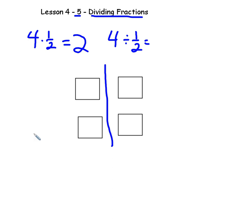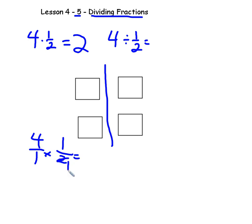The way to solve it mathematically is to write the whole number as a fraction: 4/1, times 1/2. Multiplying fractions is no big problem — multiply the top by the top and the bottom by the bottom. The trick is we can simplify before we multiply, and we can simplify any numerator with any denominator. So 4 and 2 are both divisible by 2: 2÷2=1, 4÷2=2. Then 2×1=2 over 1×1=1, which is 2.